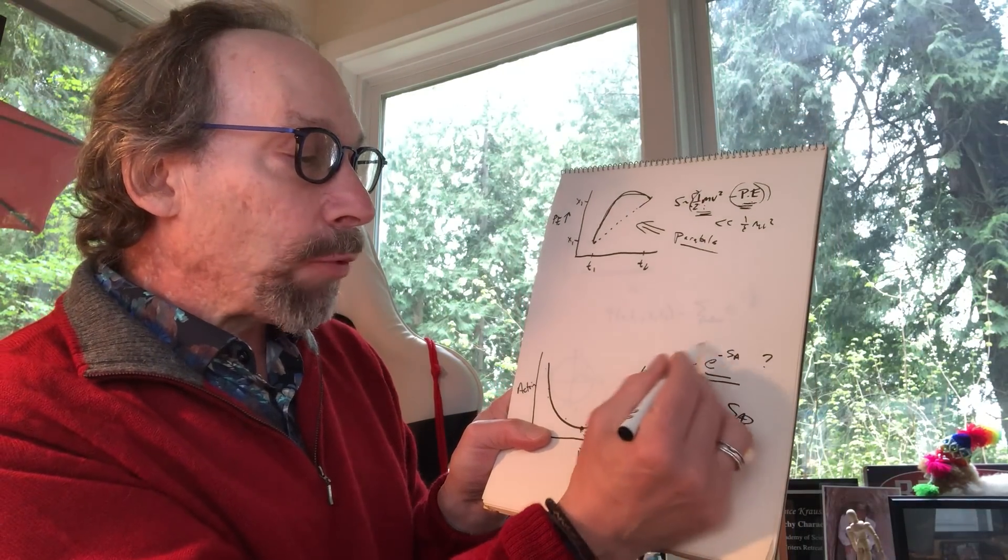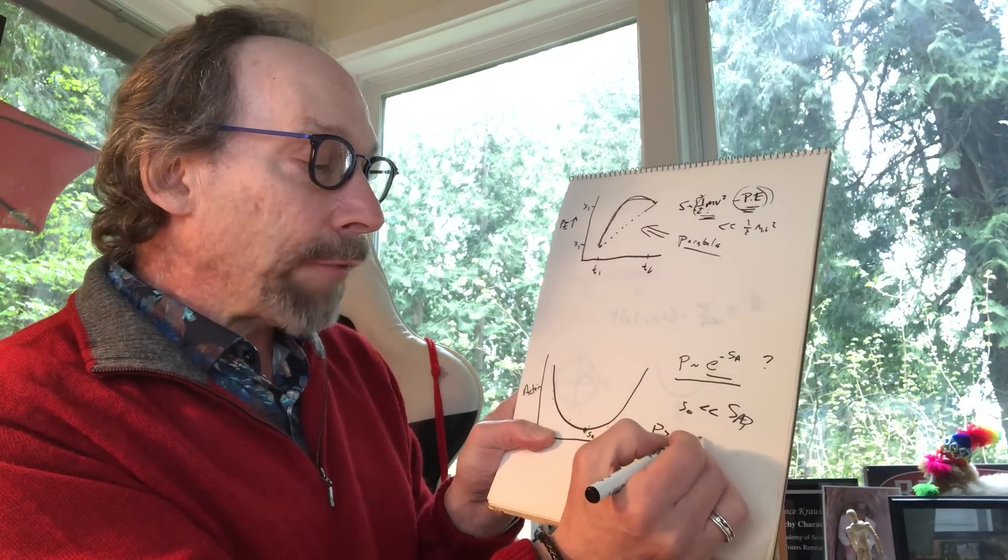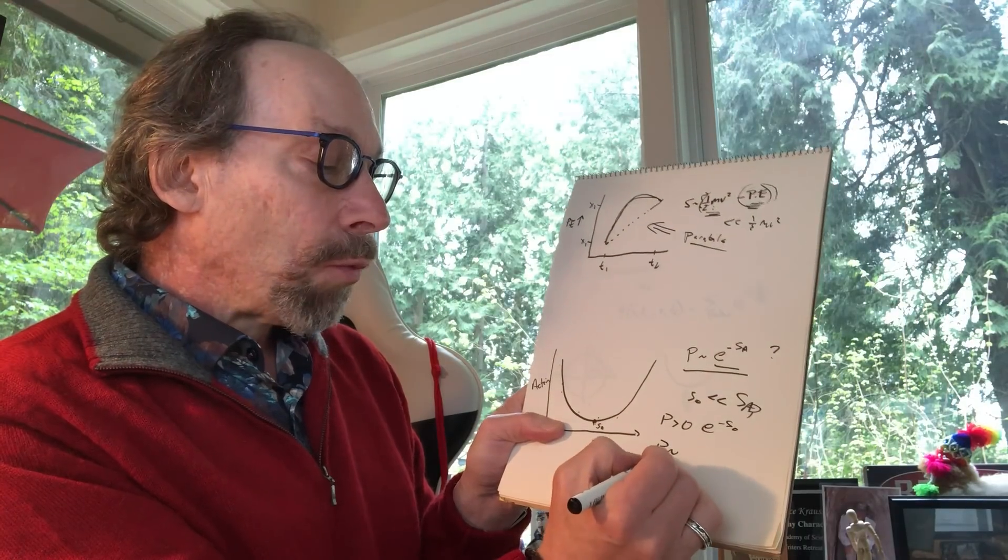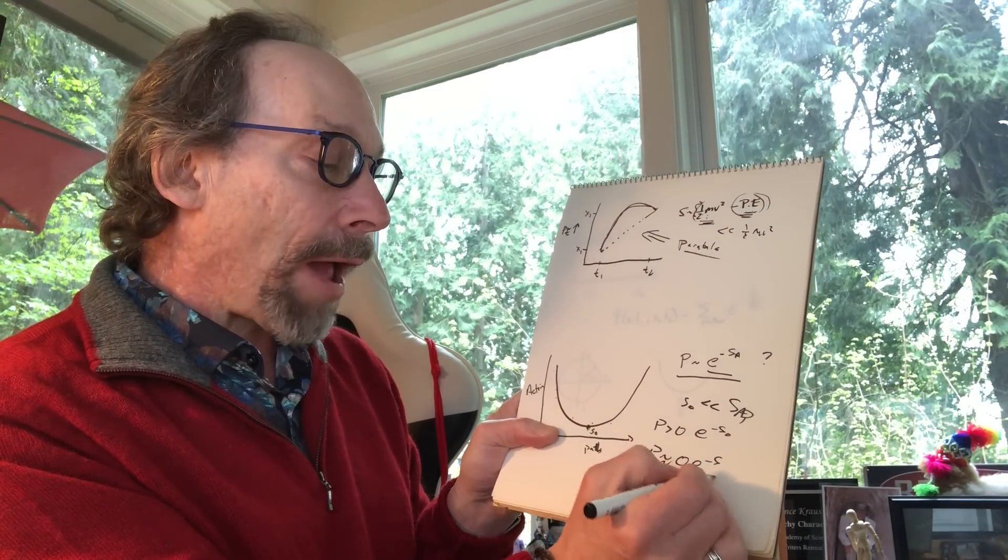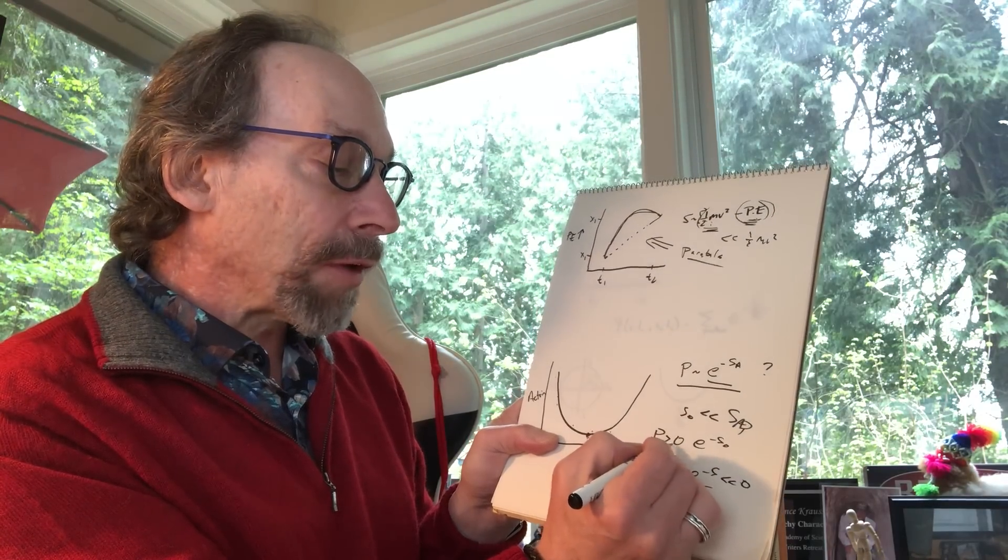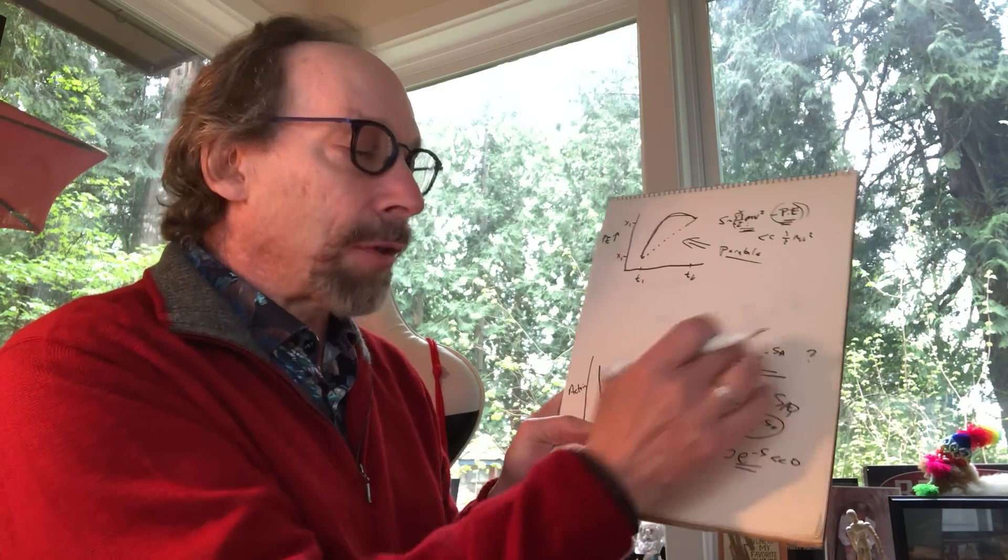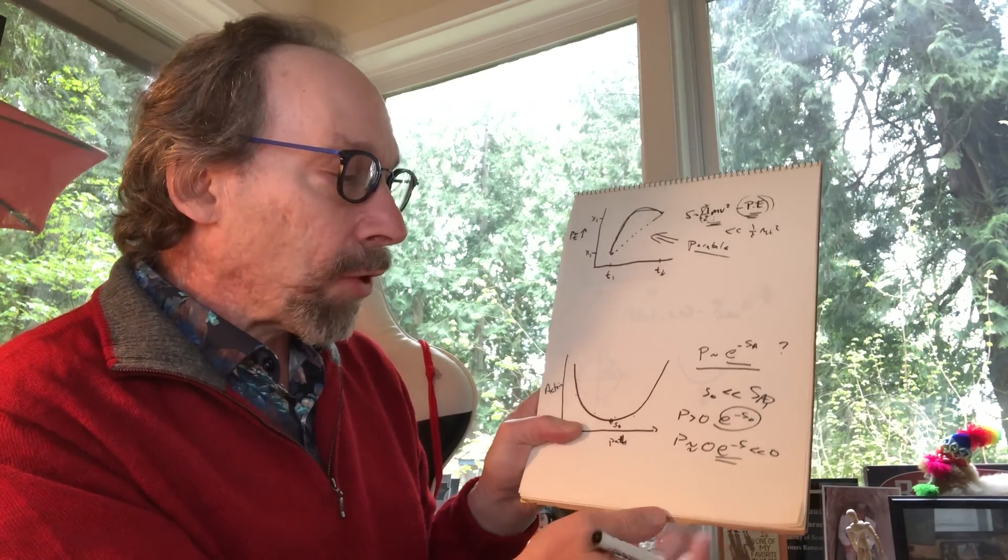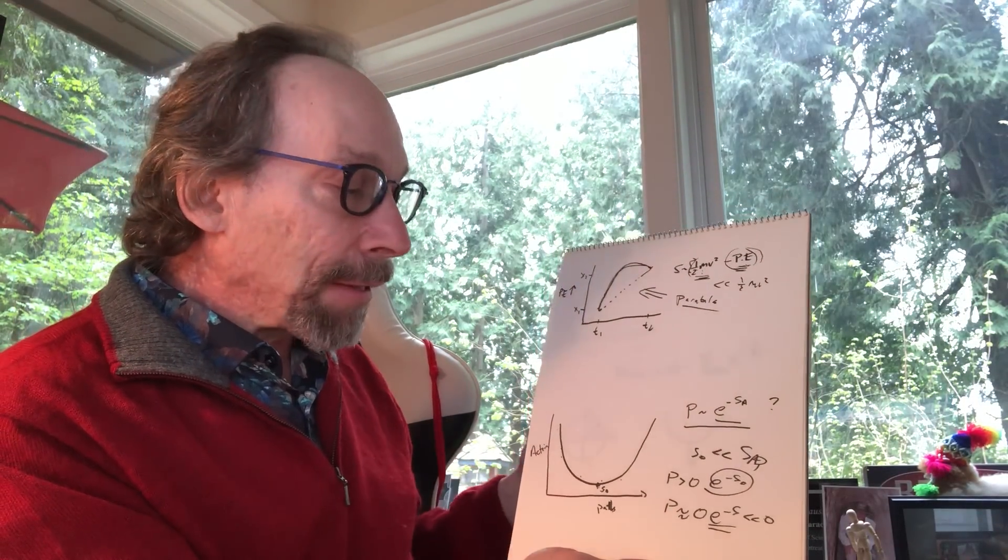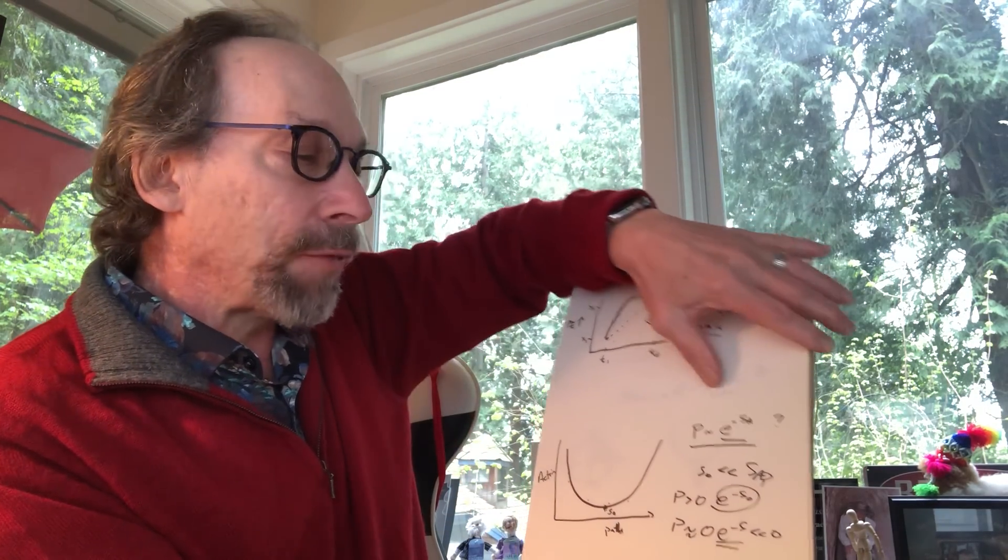then the only probability that would really matter here is the path that had the minimum action. All the other probabilities would be about zero because e to the minus S for all the other paths would be so small they'd be almost zero. So if you considered that, if you imagined that nature worked this way for classical systems, then the classical system would always take the classically preferred path. In fact, in classical mechanics it doesn't work that way. The system takes one path and there's not a probability of a lot of different paths.